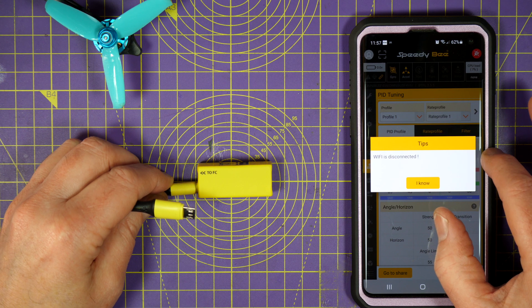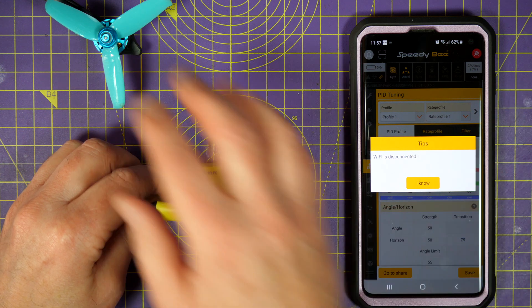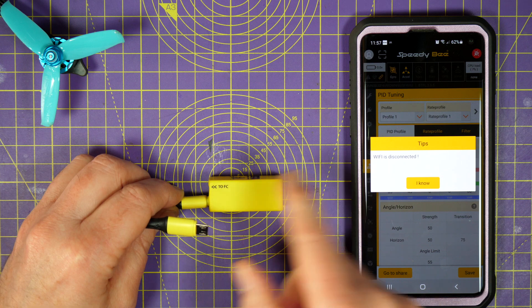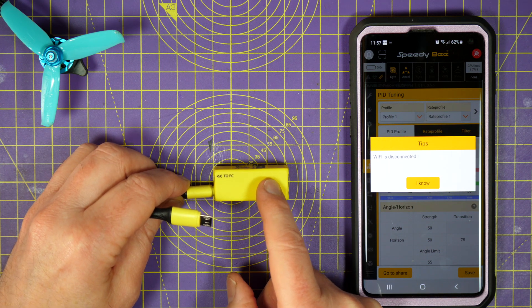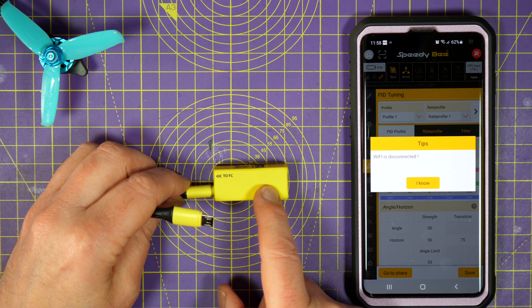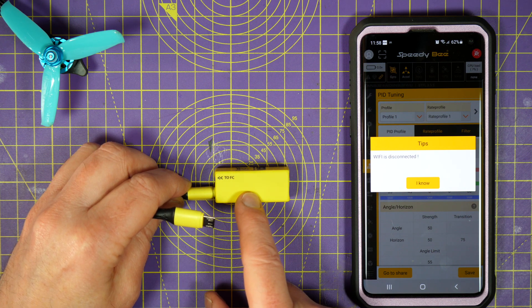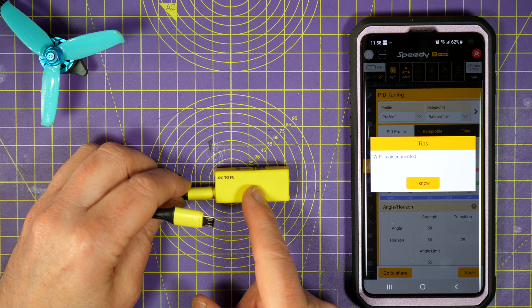And, although I haven't done a comparison, when I flashed this quad with Betaflight 4.2 using this combination, it was very quick. I was actually pretty suspicious it hadn't worked and was lying to me, because it was so much faster than usual. But, it just worked fine.